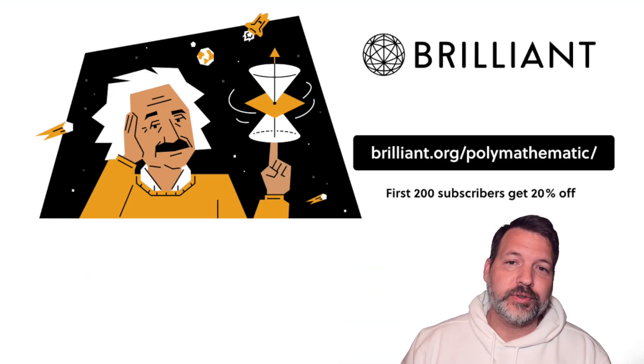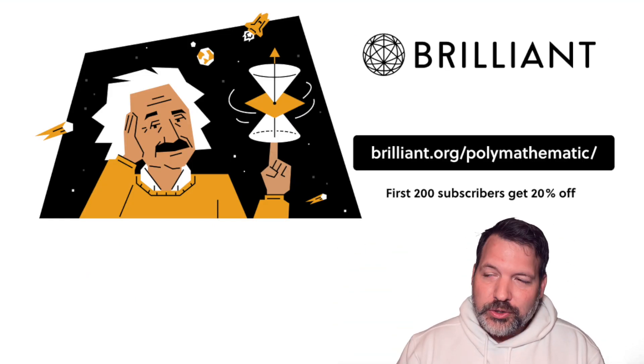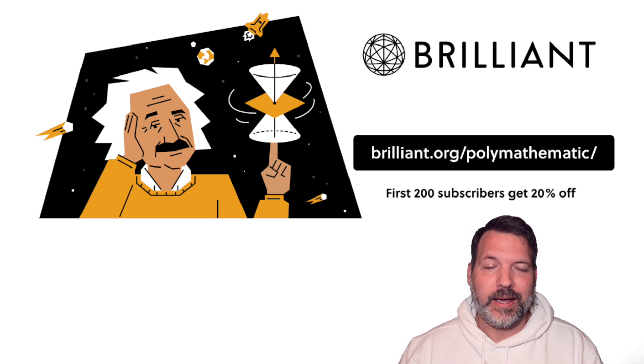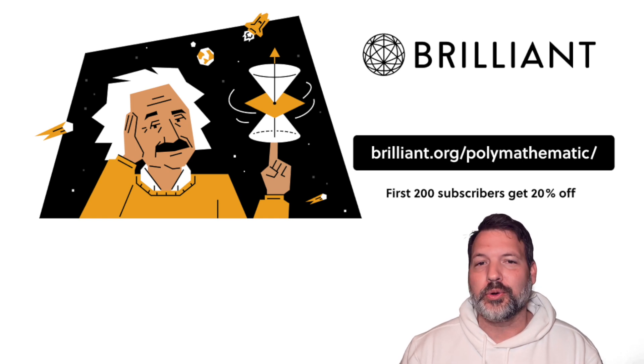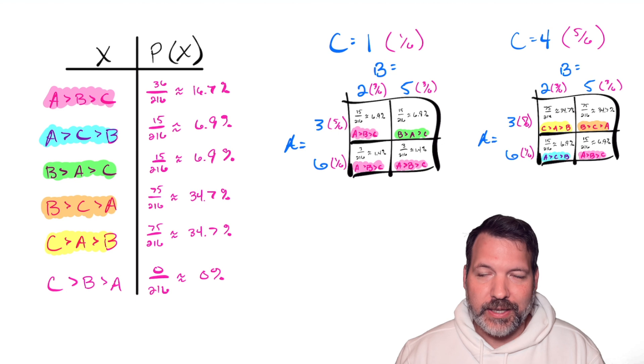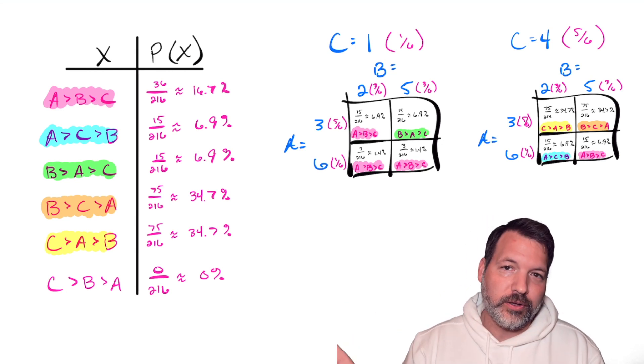Again, thank you to Brilliant.org for sponsoring today's video. If you're interested in probability or learning more about counting outcomes and things like that, I think you would really enjoy their platform. And I hope you'll check them out. Brilliant.org slash polymathematic. And again, the first 200 people to sign up for an annual premium subscription will get 20% off. That's all I've got for you today. I will see y'all next time.